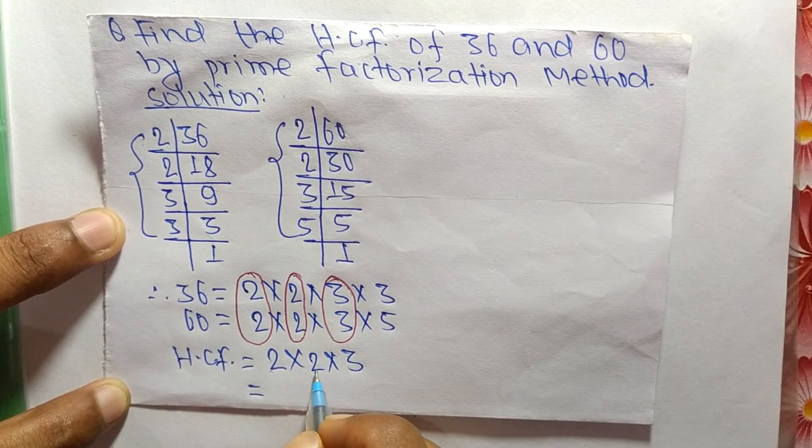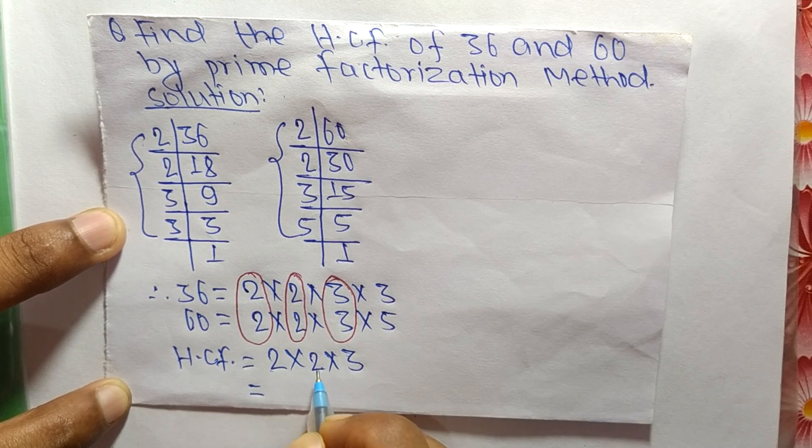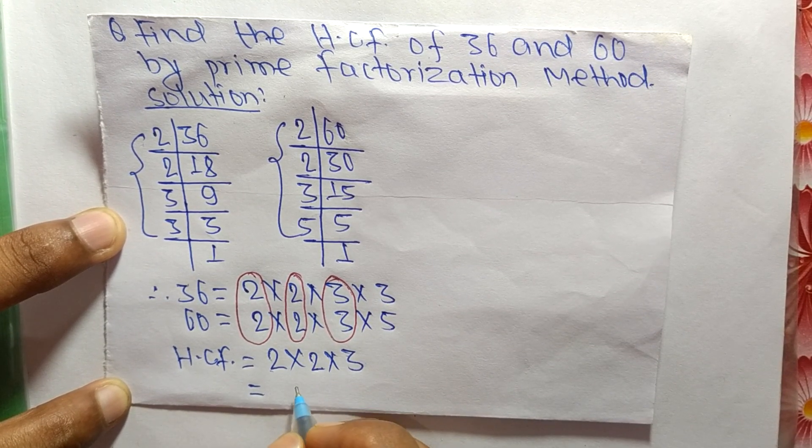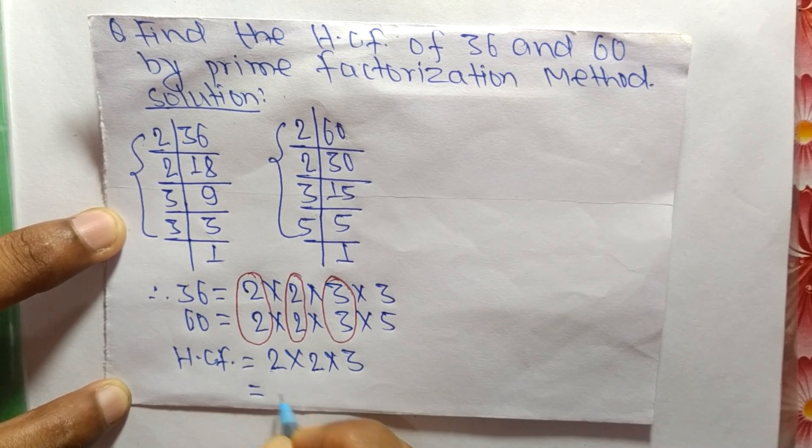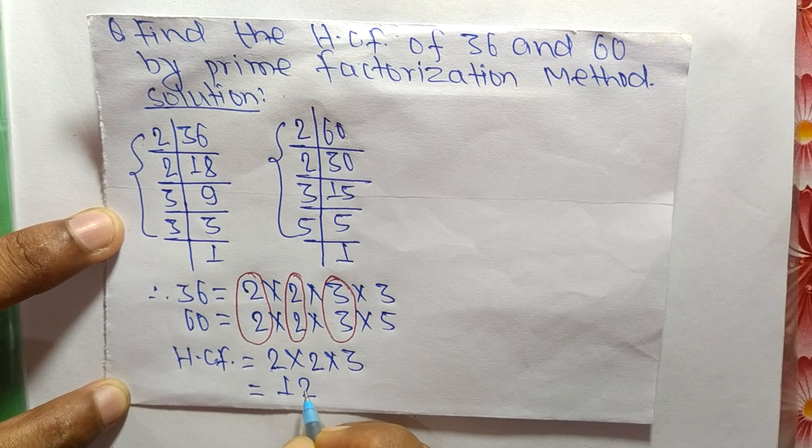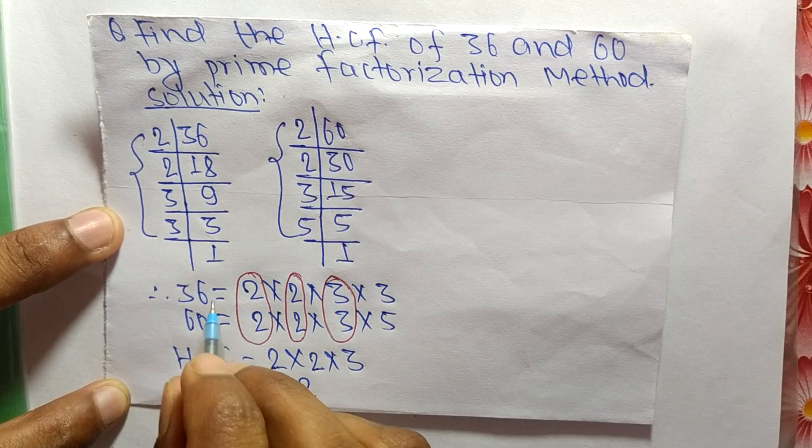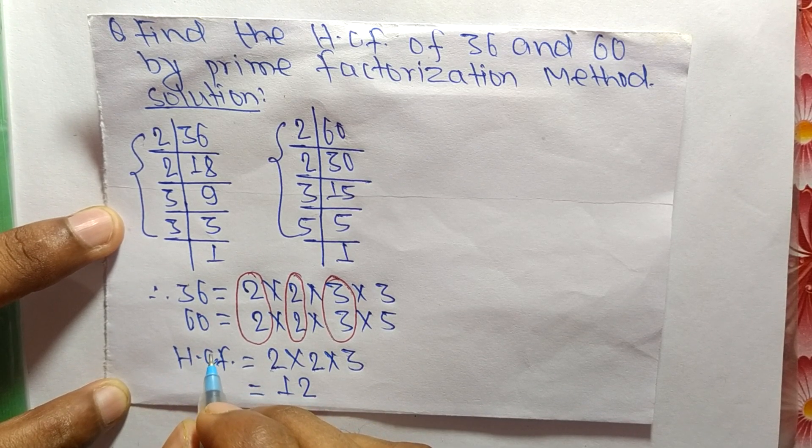2 times 2 means 4, and 4 times 3 means 12. So 12 is the HCF of 36 and 60.